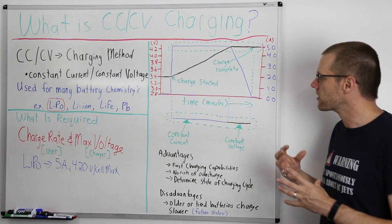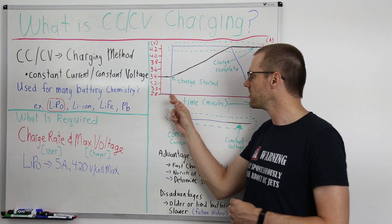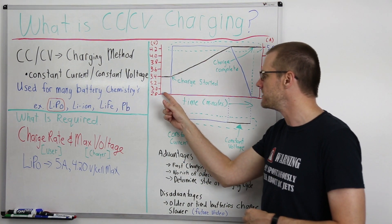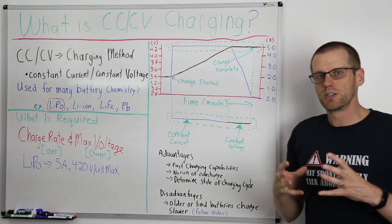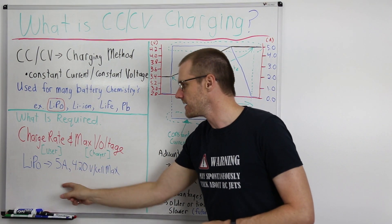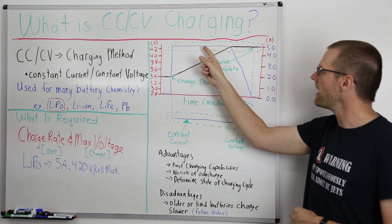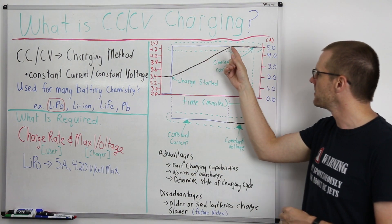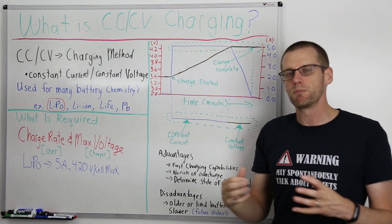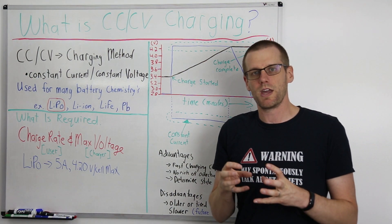Now when we look at the current, we have our pack getting all connected up and here's where we initiate our charge. We go from 0 amps all the way to our 5 amp target. This is our goal that we set up in our charger to charge at 5 amps. We're going to charge at 5 amps until this point and then from that point we end up slowly ramping down all the way to 0 amps of charge.